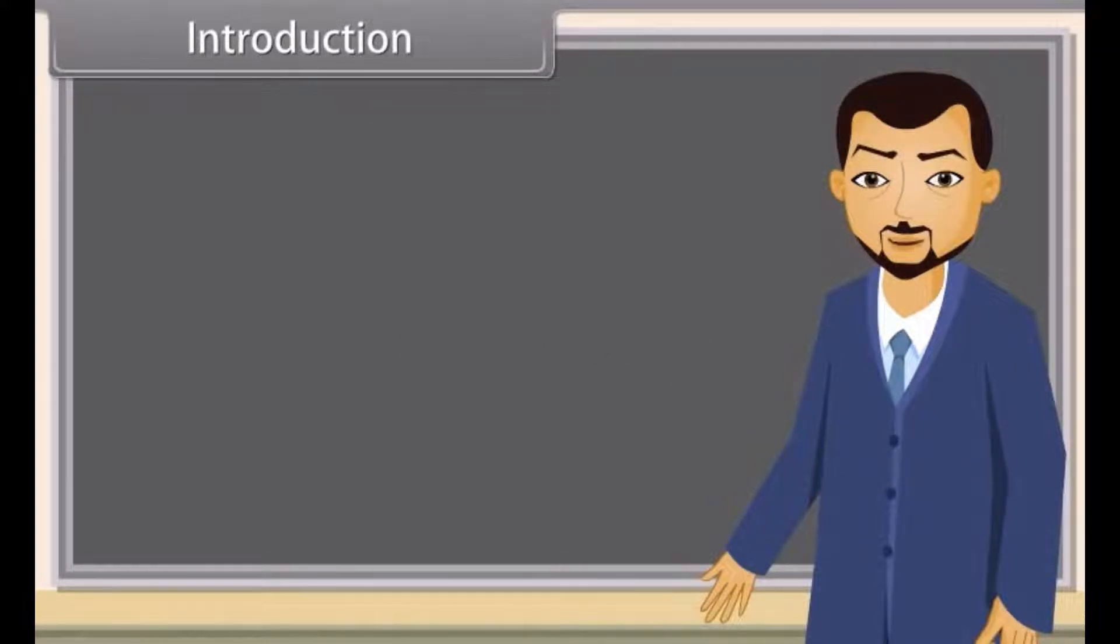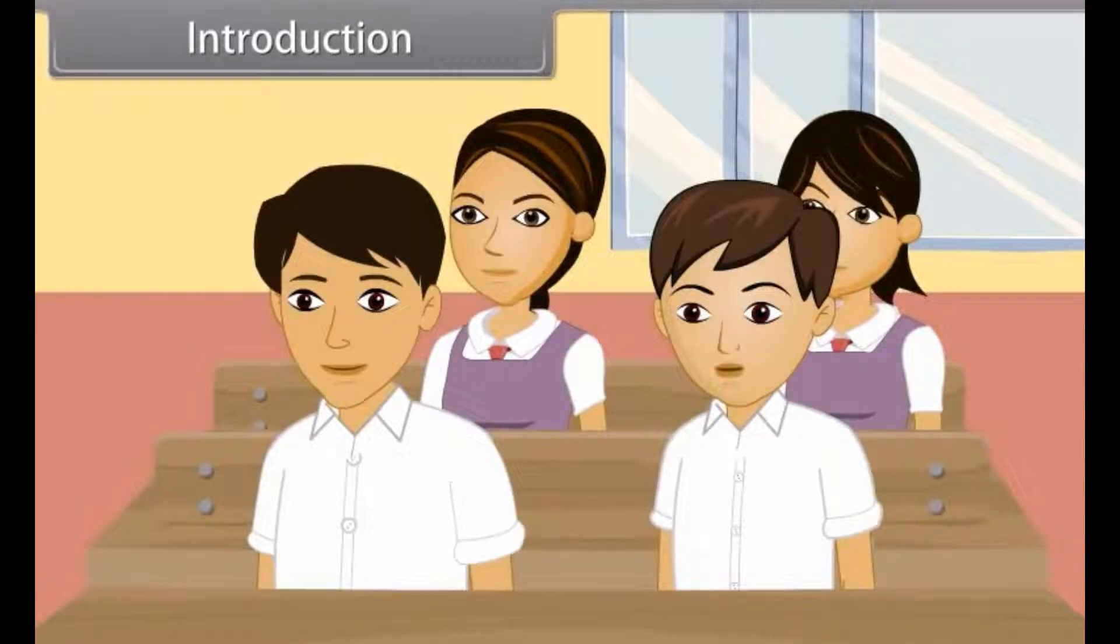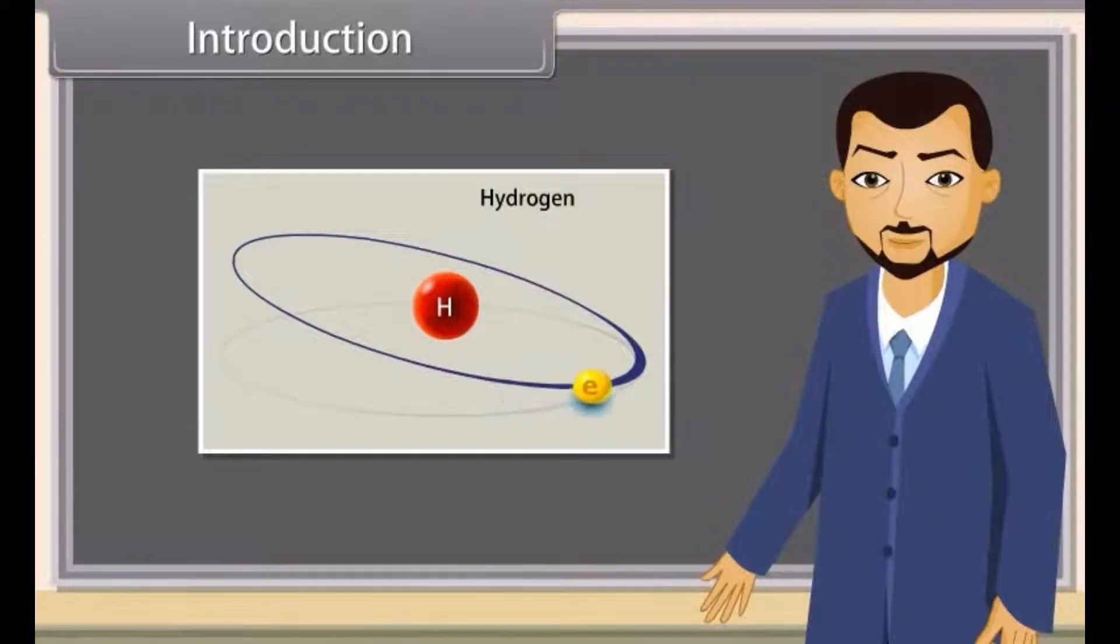Students, now we are going to know about the thing by which matter has been created. Can anyone of you tell me the name of that particular thing? Yes, Raoul. Sir, it is atom. Absolutely right. Atom is the smallest thing by which matter is made. Now let us study further to know more about atom.